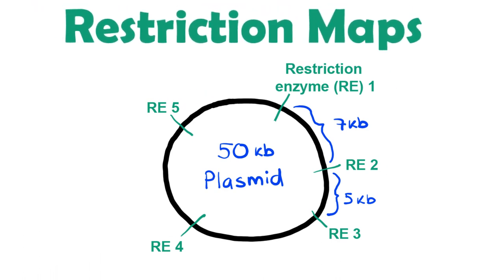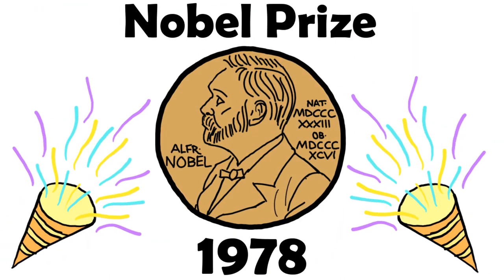Together, Arber, Smith, and Nathans won the Nobel Prize in Physiology or Medicine in 1978.